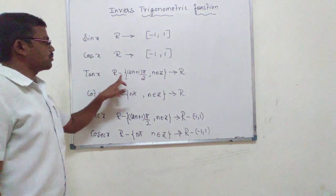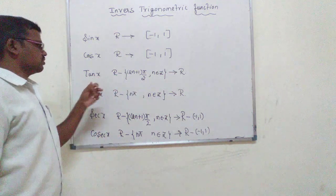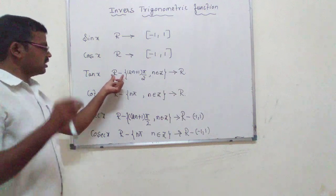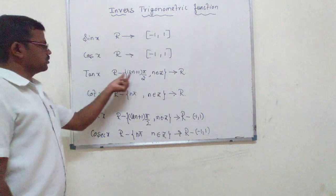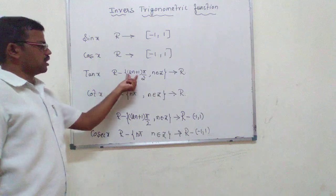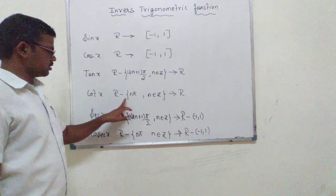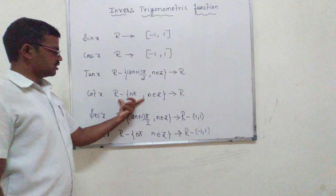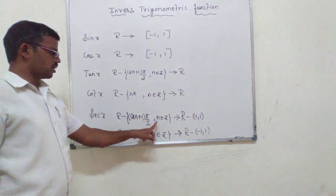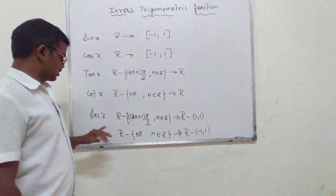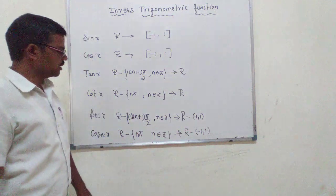The tan function is defined on ℝ minus odd multiples of π/2, because at those points the tan function is not real. So the domain of tan is ℝ minus {(2n+1)π/2 : n ∈ ℤ}, and the range is ℝ. For cot, the domain is ℝ minus {nπ : n ∈ ℤ} and the range is ℝ. For sec, domain is ℝ minus {(2n+1)π/2 : n ∈ ℤ} and range is ℝ minus (-1, 1).